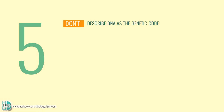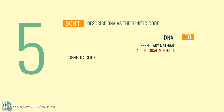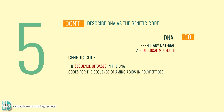Number 5: describing DNA as the genetic code. DNA is the hereditary material — it is a biological molecule. The genetic code should be defined as the sequence of bases in the DNA which codes for the sequence of amino acids in polypeptides.